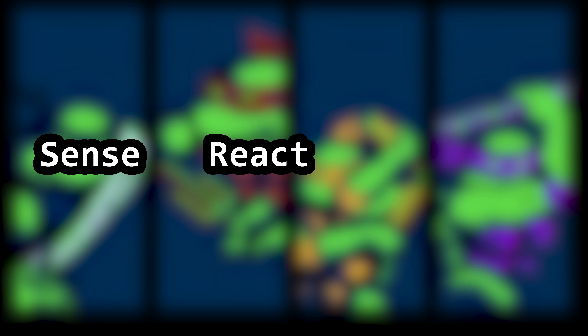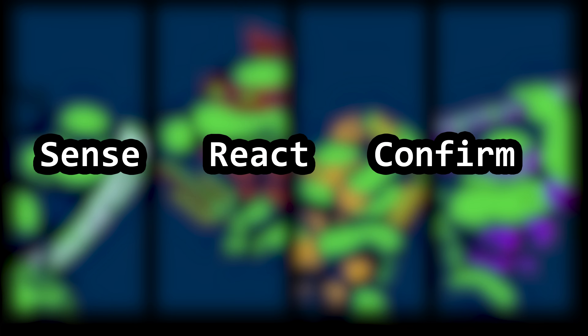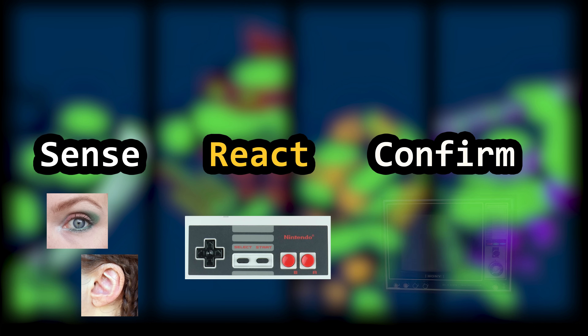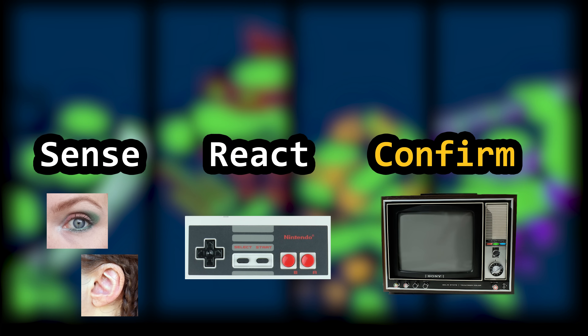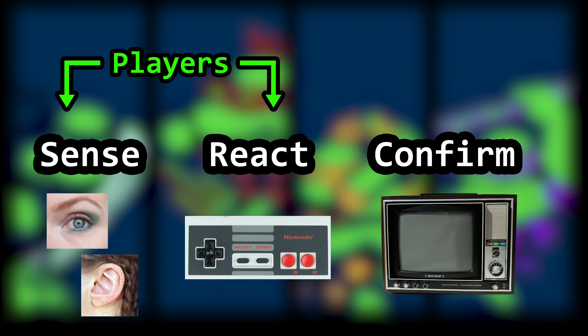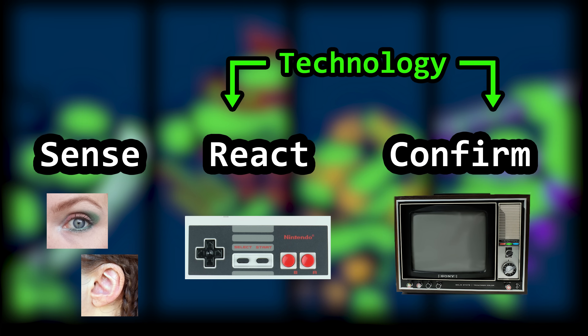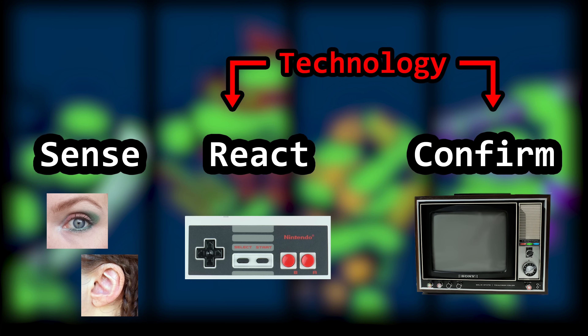Sense. React. Confirm. That's video gaming in three words. We see action on the screen and hear the sound, react with a button press, and audio and video playback confirm what happened. These words are not just a description — they are a timeline of events. Players are responsible for the time between sense and react. Technology is responsible for the time between react and confirm. And if too much time passes between react and confirm, then we have a problem. We call it lag.